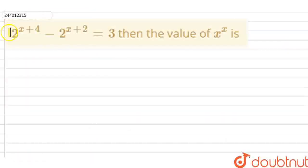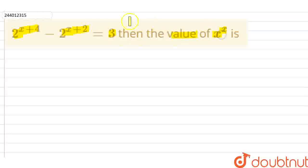Hello friends, this question is given to you: 2 to the power x plus 4, minus 2 to the power x plus 2, is equal to 3. Then you have to find the value of x to the power x.